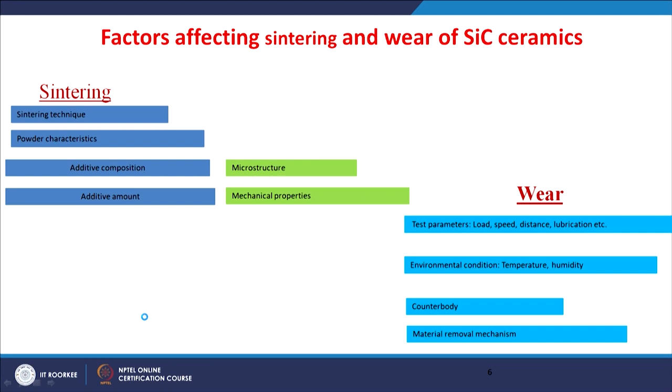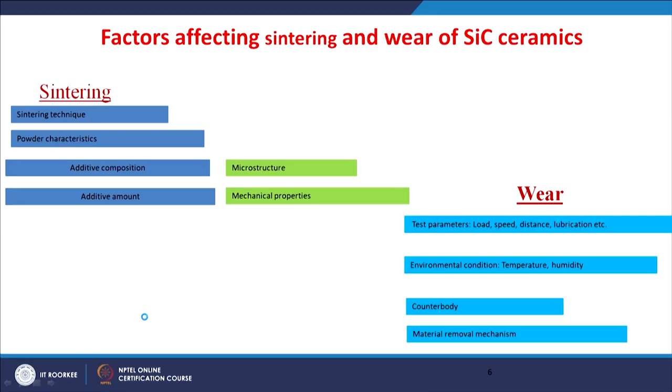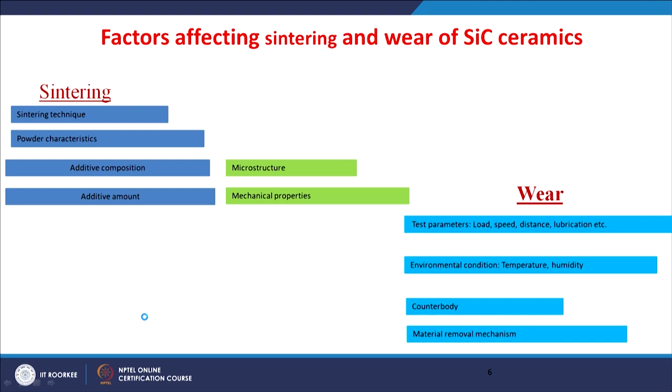The factors affecting both sintering and wear of silicon carbide include the sintering technique, the characteristics of the powders used, and importantly the composition and content of additives used for sintering. These sintering factors influence the microstructural features and mechanical properties of the sintered material, which in turn affect the wear behavior. Wear behavior is particularly affected by factors like load, speed, distance, lubrication, environmental conditions such as temperature and humidity, and the counter body used.